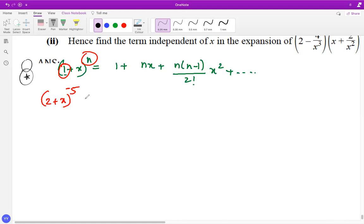I'm going to first take this 2 common, so that's going to be [1 + x/2]^(-5), and this minus 5 belongs to the power, belongs to this as well. So you've got 2^(-5) [1 + x/2]^(-5), and this is nothing but 1/32 [1 + x/2]^(-5). So this is what I got to expand now.